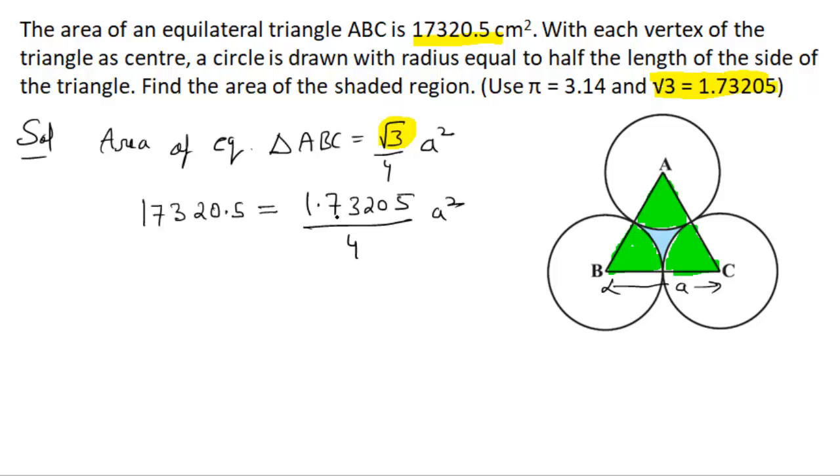So we write: 17320.5 equals (1.73205 upon 10) times (1 upon 4) times a². Simplifying, 17320.5 equals (1.73205 upon 10) times (1.73205 upon 4) times a². This cuts to give us 17320.5 upon 4, and we cross-multiply.